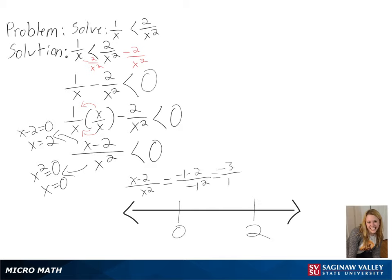A number we can use in between 0 and 2 is 1, and we will get a negative number over a positive number, or a negative number.